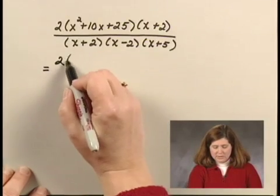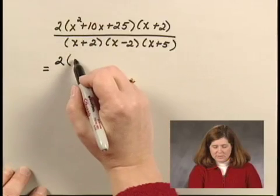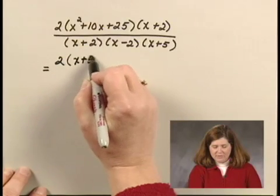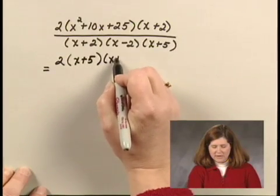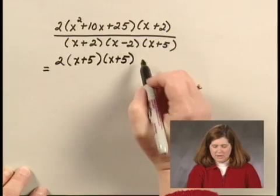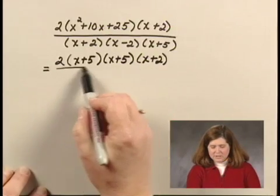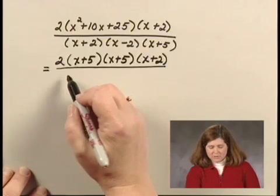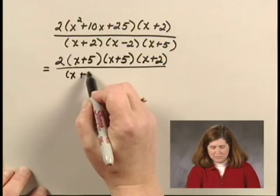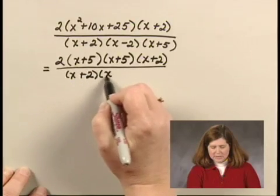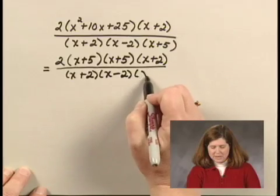So I have 2 times, this factors into x plus 5 times x plus 5. Then I copy the factor x plus 2. The denominator is already completely factored, so I just copy it. x plus 2 times x minus 2 times x plus 5.